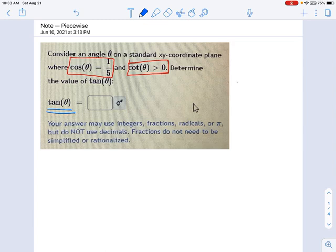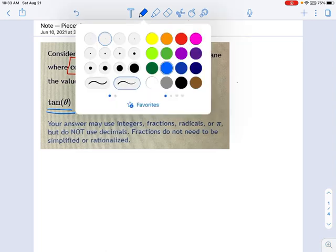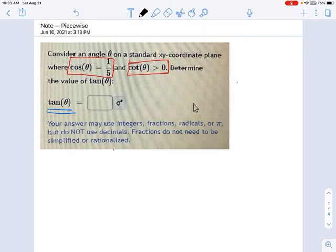Now, obviously, we can't use the cotangent being positive to figure out tangent, because there's all sorts of positive numbers the cotangent can be. So fall back on your training. We always draw triangles in this section. So I'm going to draw a standard coordinate plane right here.